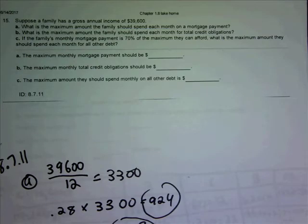Suppose a family has a gross annual income of $39,600. What is the maximum amount a family should spend each month on a mortgage payment? What is the maximum amount a family should spend each month for total credit obligations? If the family's monthly mortgage payment is 70% of the maximum they can afford, what is the maximum amount they should spend each month for all the debt?